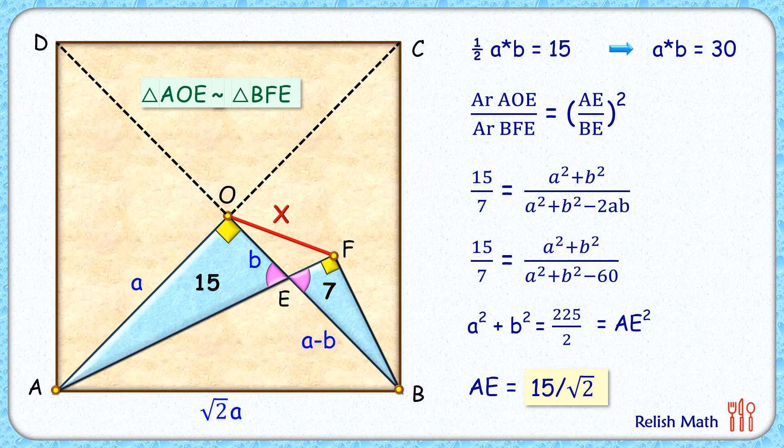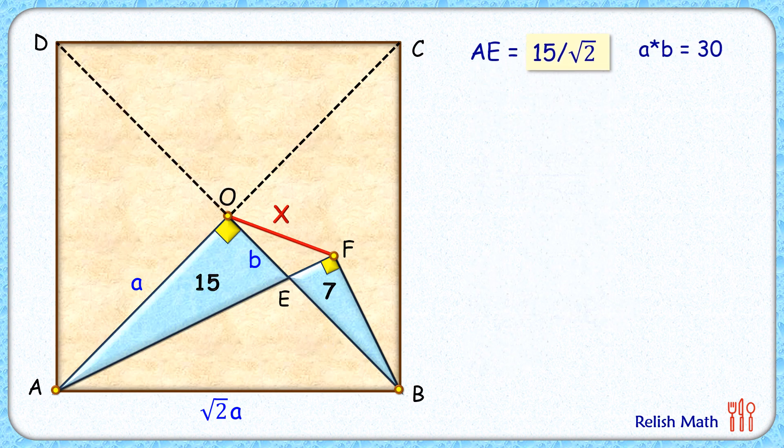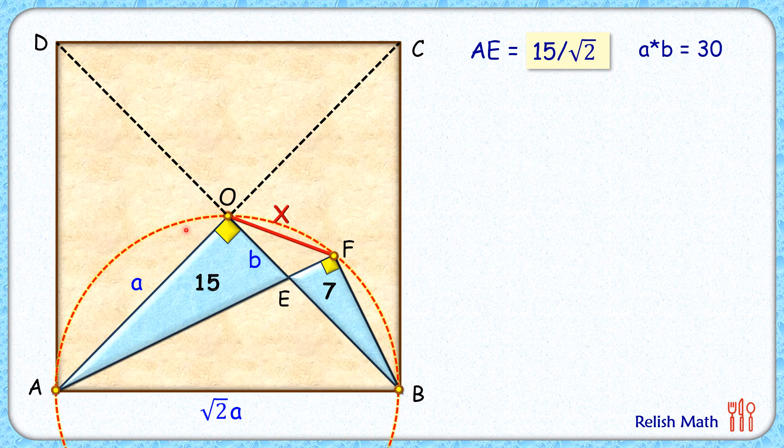Now solving it further, if we check, this angle O is 90 degrees and angle F is also 90 degrees. Thus, by theorem, the points A, B, F, O are cyclic. So let's draw a circle passing through these four points.